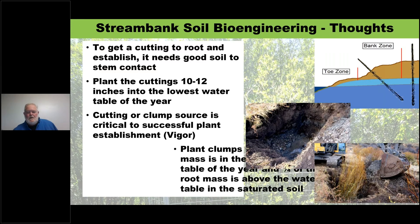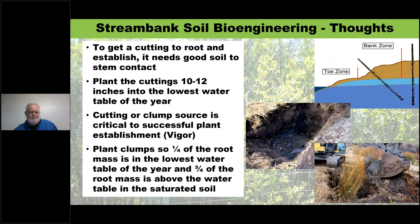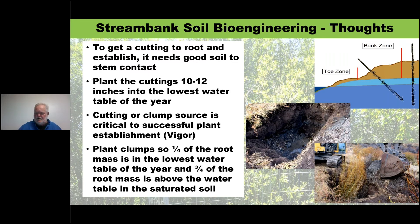When planting clumps, plant so that one quarter of the root mass is in the lowest water table of the year. Dig down to where the water table is, put the clump in with about a quarter of the root mass in the water and three quarters above it in saturated soil, then pull the soil back in and water extensively. I have publications on how to use plant clumps that I'll reference at the end.